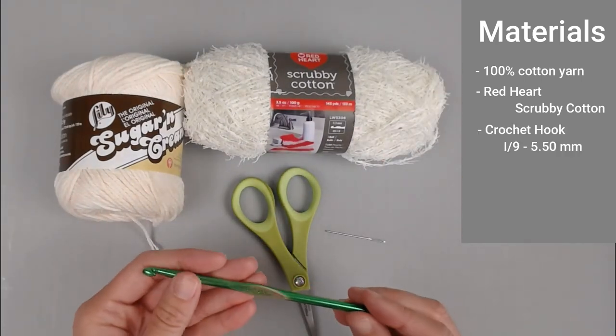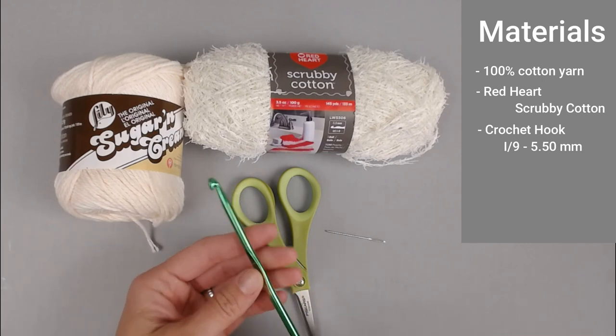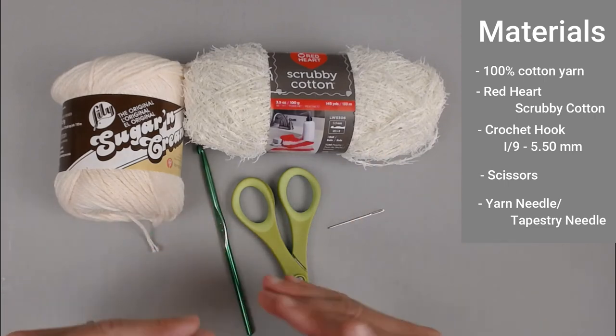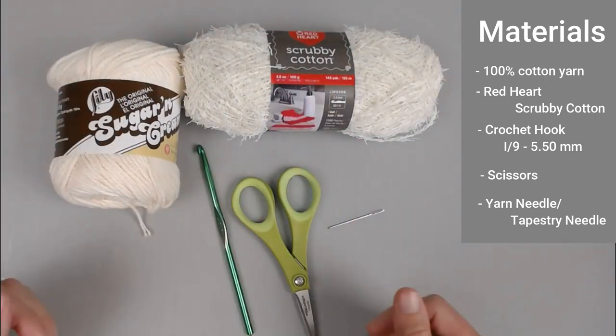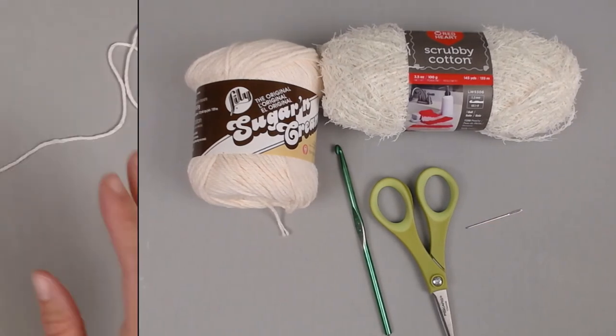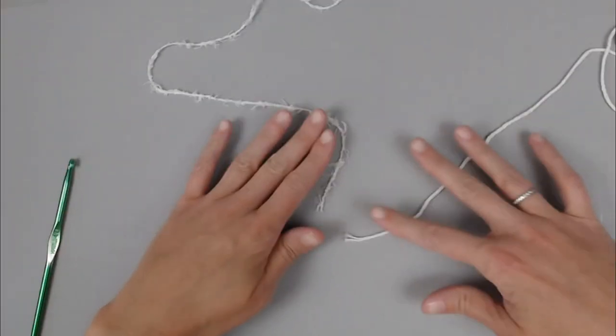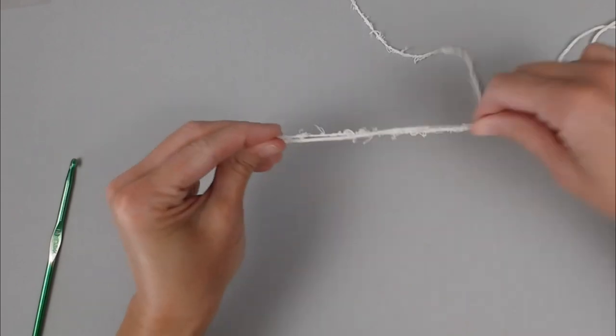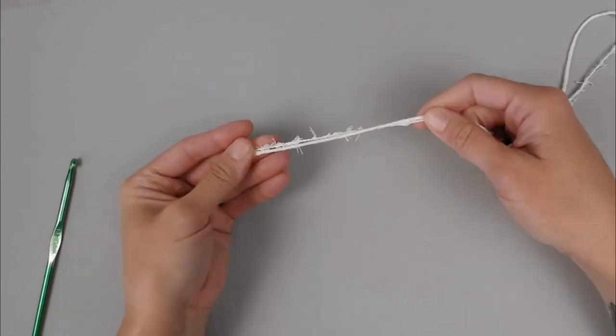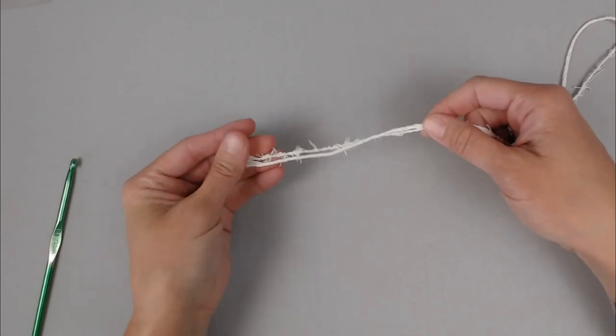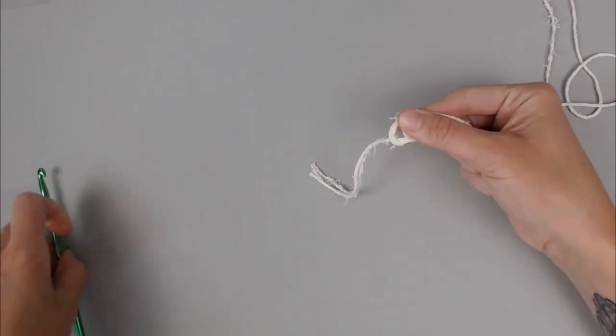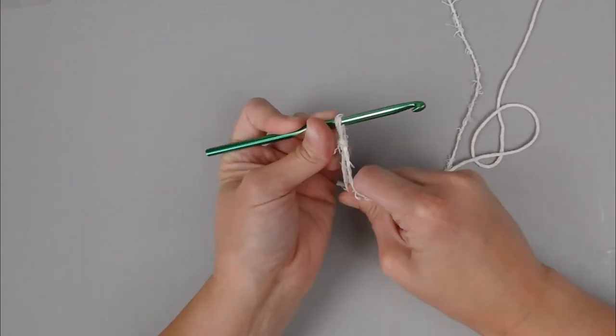You'll need a crochet hook size I9 or 5.5 millimeter, a pair of scissors, and a yarn needle or tapestry needle to help you weave in your ends at the end of the project. Once you have all of your materials, let's go ahead and head straight to actually making our spa back scrub. We begin by working both of these yarns together. Take both yarns, match them up, and they will be crocheted as one.